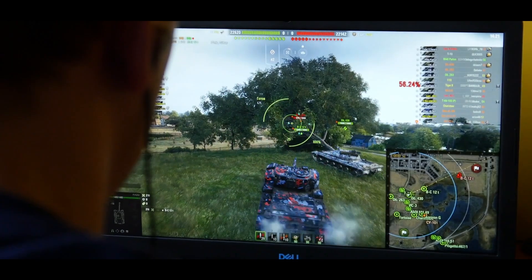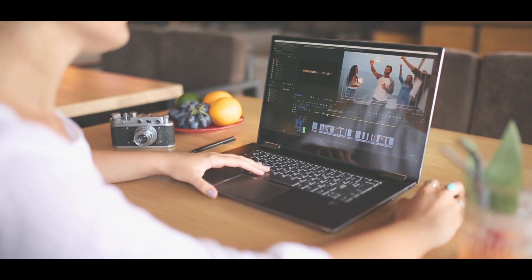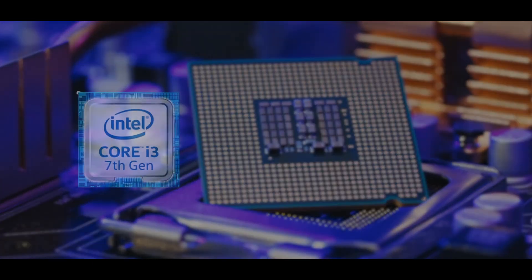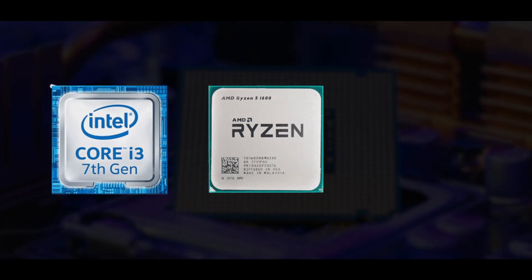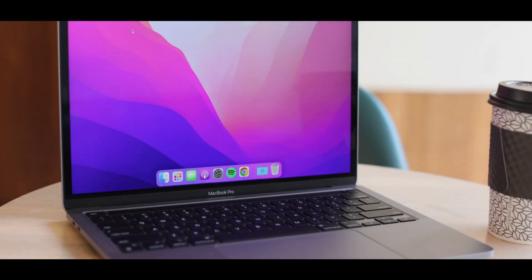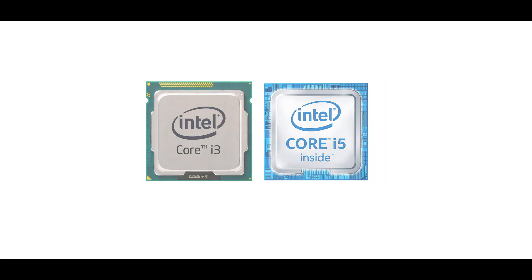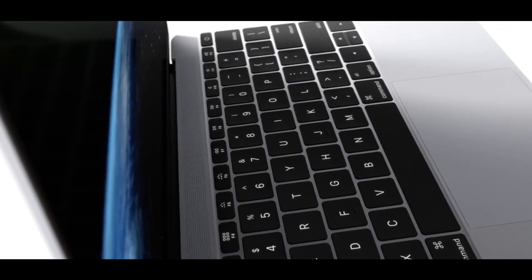There are many options for the processor. You can use Intel, AMD, and Apple M-series. Intel and AMD CPUs are available for Windows laptops, and Apple M-series is available for MacBooks. The processor options include i3, i5, i7, and i9. For MacBooks, you can use M1 or M2.